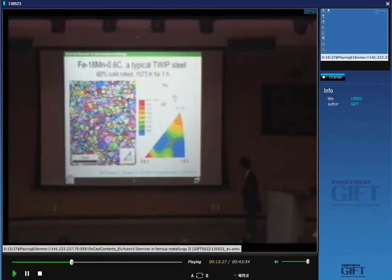You can see many colors on it. That means the texture is random. The highest intensity is 1.4. One is the average. This is the microstructure.